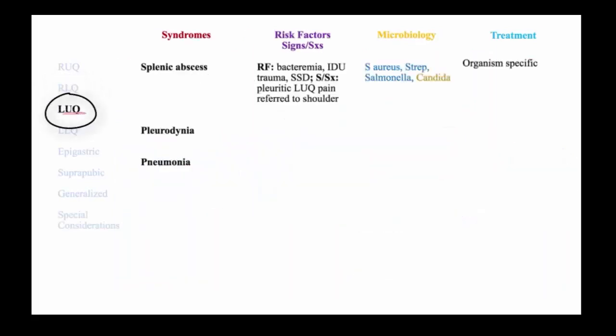Left upper quadrant pain includes pleurodinia and referred pain from pneumonia, and occasional splenic abscesses, which are generally rare. They occur in the context of bacteremia, endocarditis — typically in an individual with injection drug use — or trauma. Because of splenic involvement in sickle cell disease, splenic abscesses are also possible in this host.